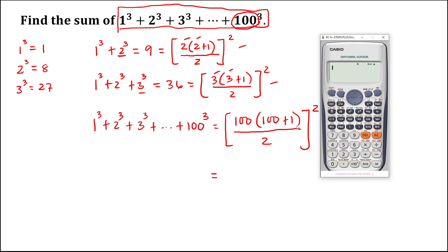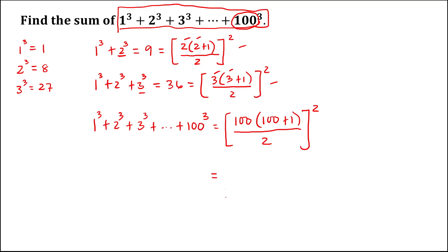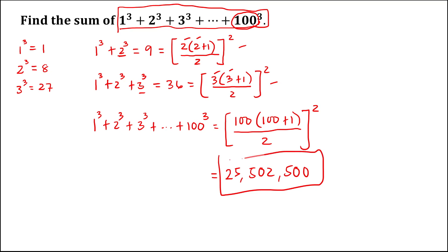To find the value, we have 100 plus 1, that's 101, times 100, then divide by 2, then take the square. So the sum of the series is 25,502,500.